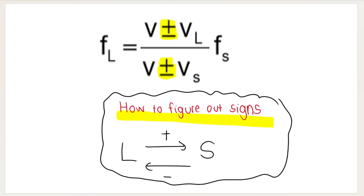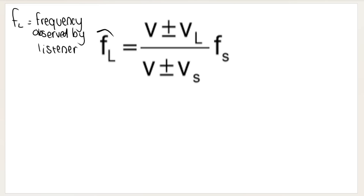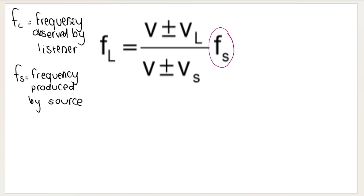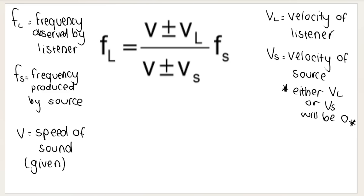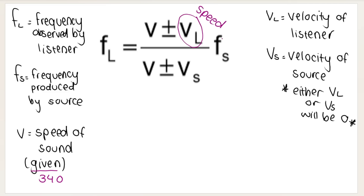FL is the frequency observed by the listener — another word for listener is observer. FS is the frequency produced by the source. V is the speed of sound, usually 340 meters per second at both top and bottom — but you cannot cancel them because of the plus-minus signs. VL is the velocity of the listener, and VS is the velocity of the source.